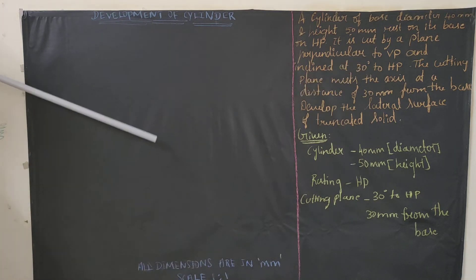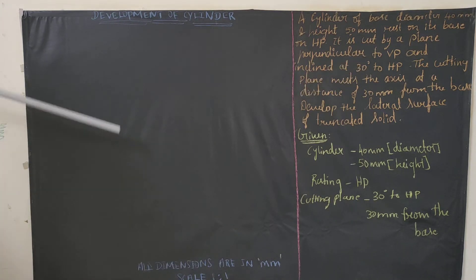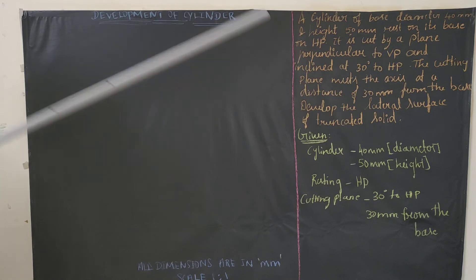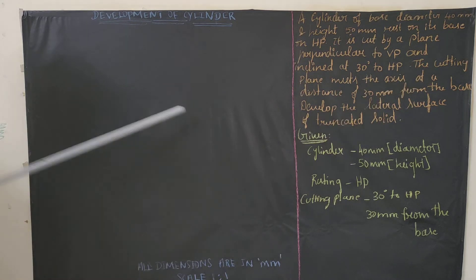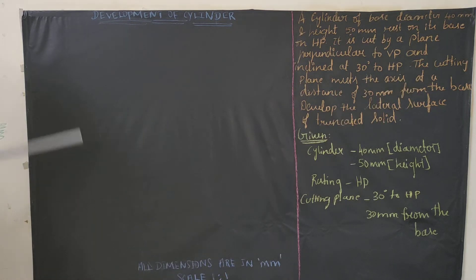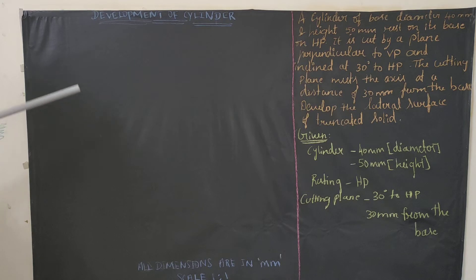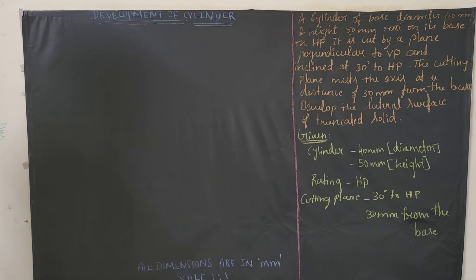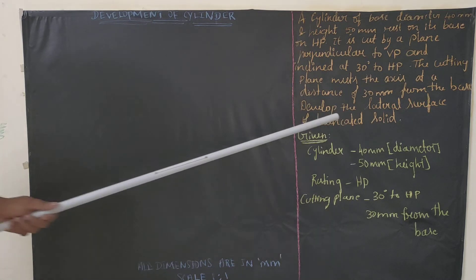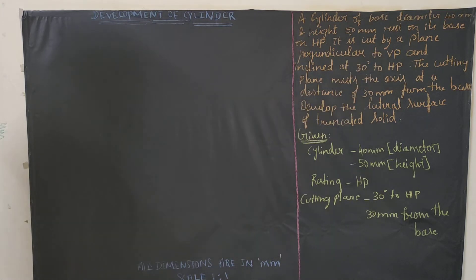The cutting plane lies in the front view and is inclined 30 degrees to HP. It meets the axis at a distance of 30 mm from the base. So the cutting plane will meet the axis from the base at a distance of 30 mm at an angle of 30 degrees. We need to develop the lateral surface of the truncated cylinder.